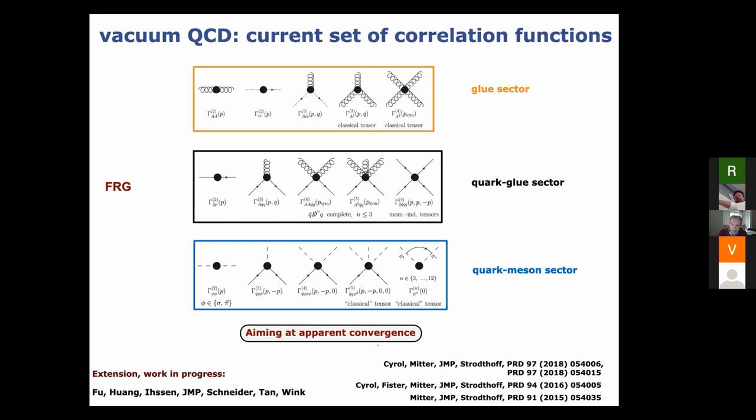Let me walk through the approximation scheme. We have the gluon sector, with the gluon propagator in Landau gauge, so we also have ghosts, and then vertices. For the purely gluonic vertices, we took only the classical tensor structures because we can show that the other tensor structures are sub-leading.